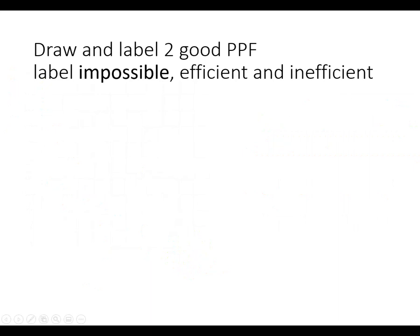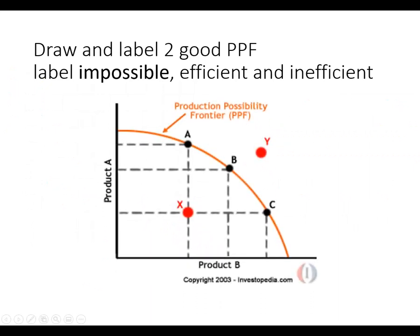A lot of times we look at these in the book and see product A and product B on this example. Points A, B, C are all efficient. This point here, we'll call it point F. This point down here, we'll call it point G. Those are both efficient. Any of those points are efficient. Point X is inefficient because we're inside of the production possibility frontier. Point Y is not possible until we get more land, labor, and capital.